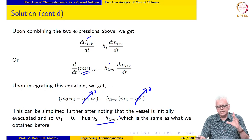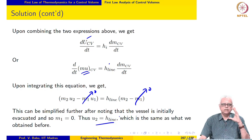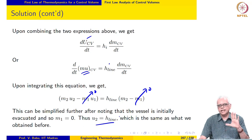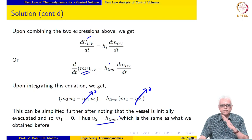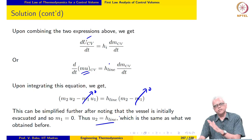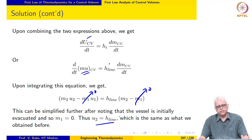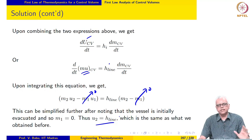Unsteady analysis proceeds in more or less the same manner as steady analysis. You have the unsteady flow energy equation and the mass balance equation. You look at the equations, simplify them, throwing out terms which are not relevant or equal to 0, then simplify and integrate using the information that is given.